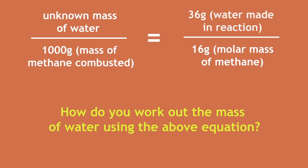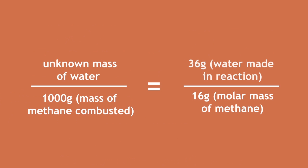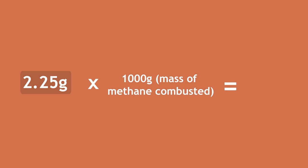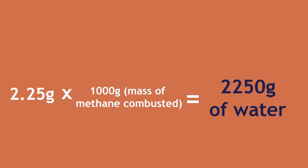The amount of water produced by combusting 1000 grams of methane is 2250 grams of water. This is because 36 divided by 16 gives 2.25. You then have to rearrange this formula for the unknown mass of water. This is done by multiplying 2.25 by 1000 grams of methane combusted, giving 2250 grams of water produced. Did you get it right?